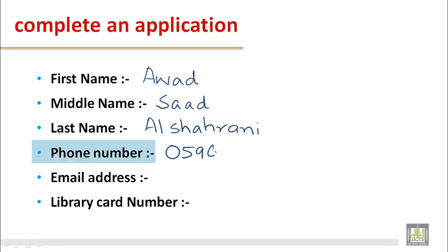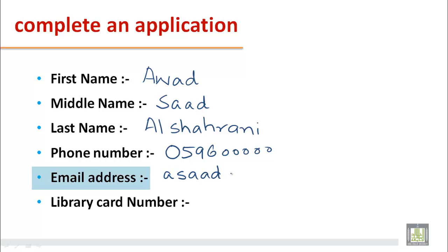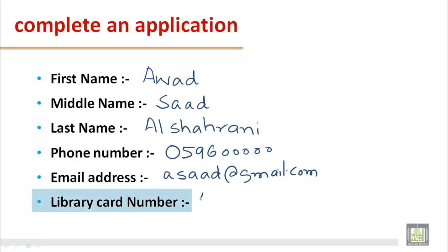You write your phone number. Next, your email address — for example, asad@gmail.com. You write your email address. And suppose you have your library card number, for example A34110 — you write your library card number. This is how we complete an application.